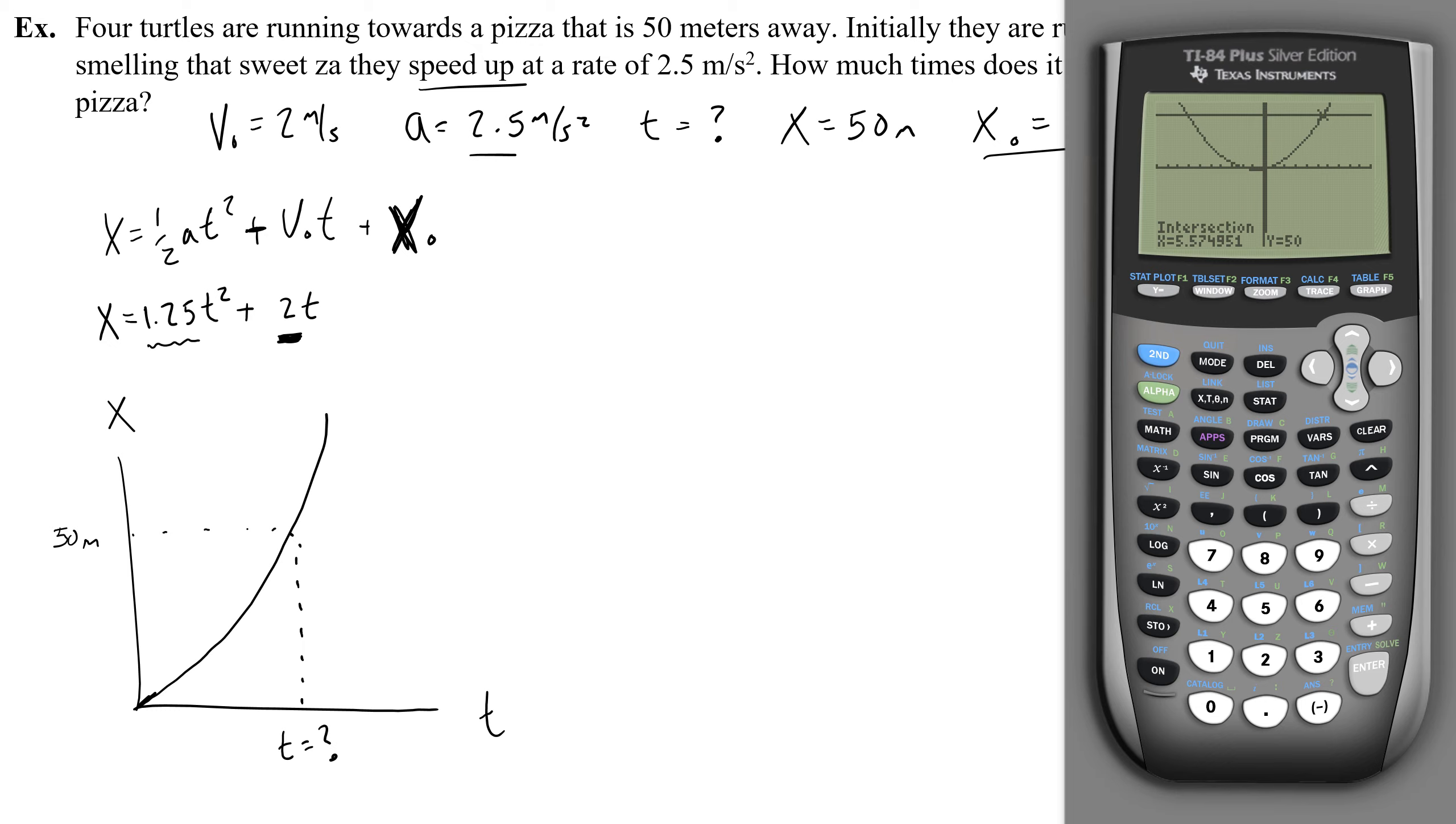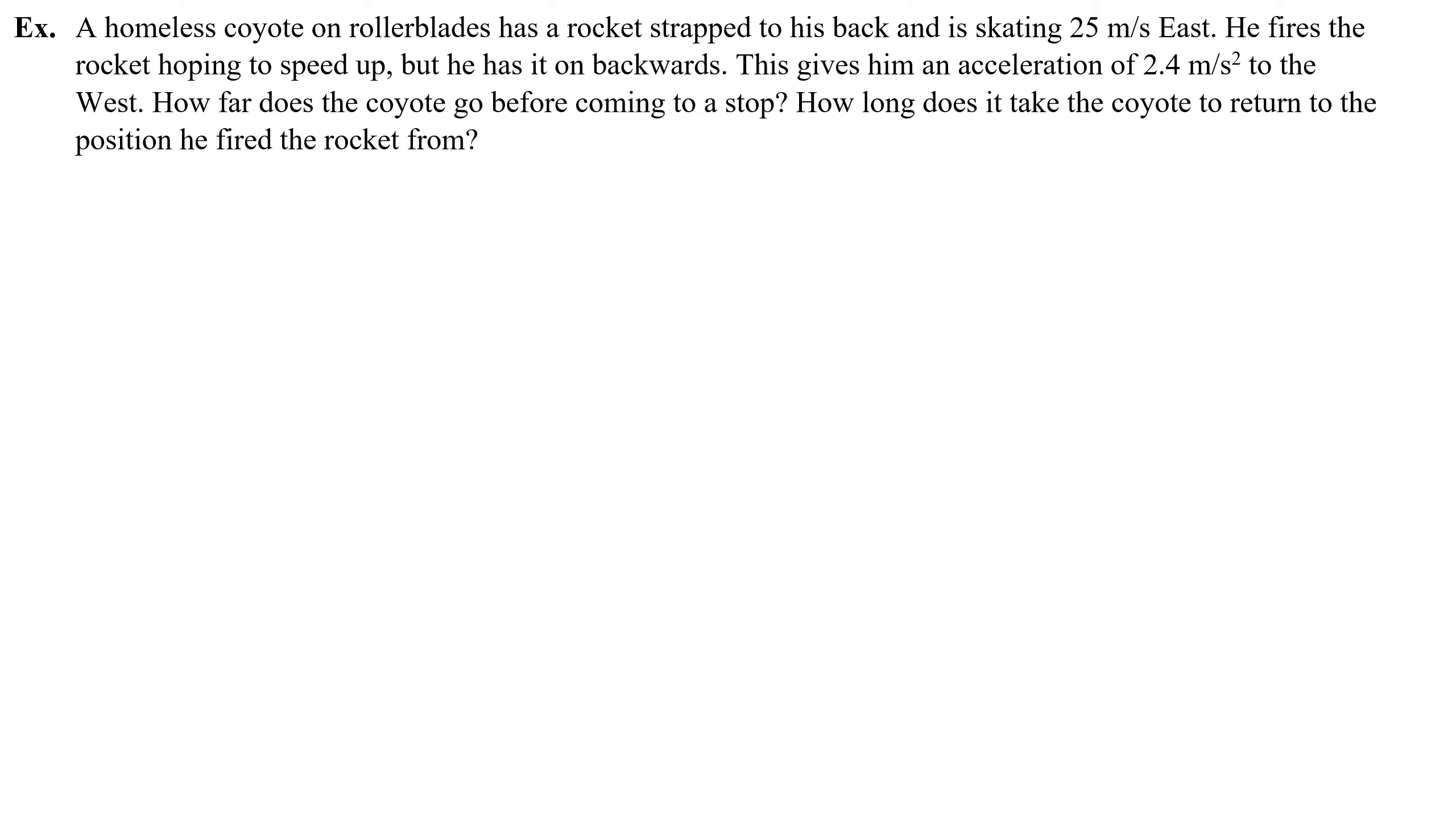Let's do one more problem where graphing can give us quick answers. A homeless coyote on rollerblades has a rocket strapped to his back and is skating 25 meters per second east. He fires the rocket hoping to speed up, but he has it on backwards. This gives him an acceleration of 2.4 meters per second squared to the west. How far does the coyote go before coming to a stop? How long does it take the coyote to return to the position that he fired the rocket from?